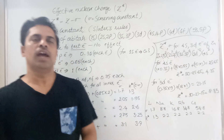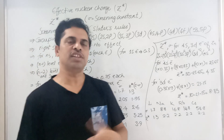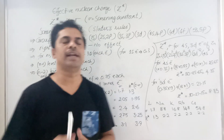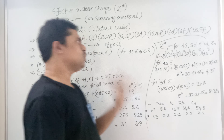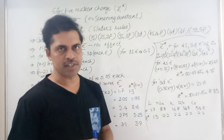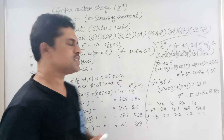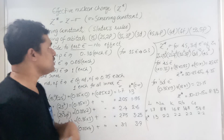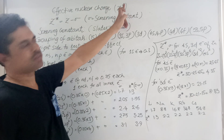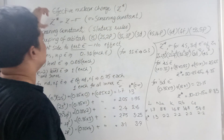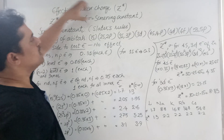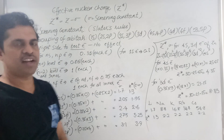Hello all. We will discuss in this session about effective nuclear charge and screening constant — how to calculate these. It is one important topic for all entrance examinations. Effective nuclear charge is given by Z star. Z star is equal to Z minus sigma, where Z is the atomic number and sigma is called the screening constant.